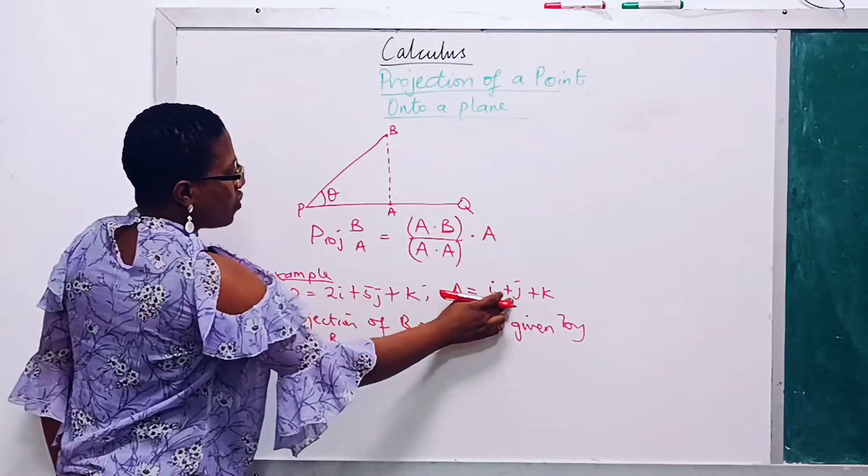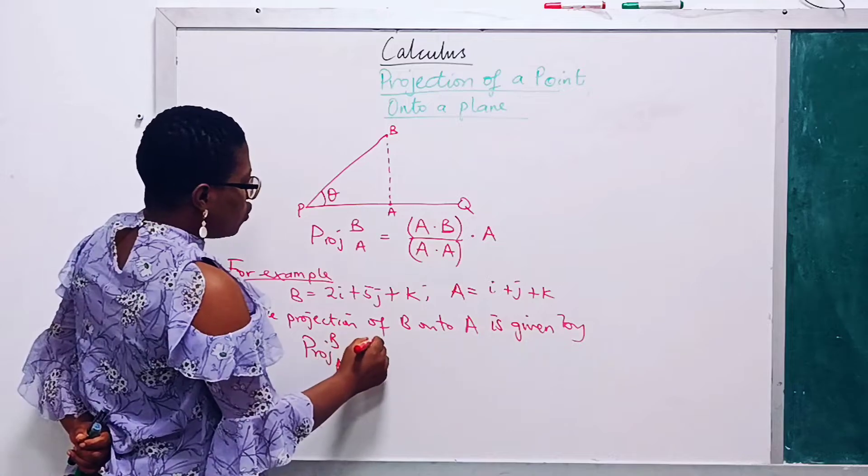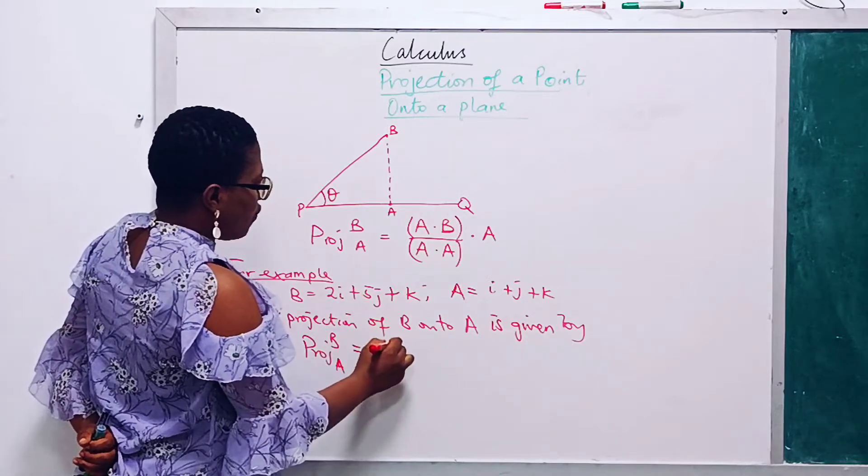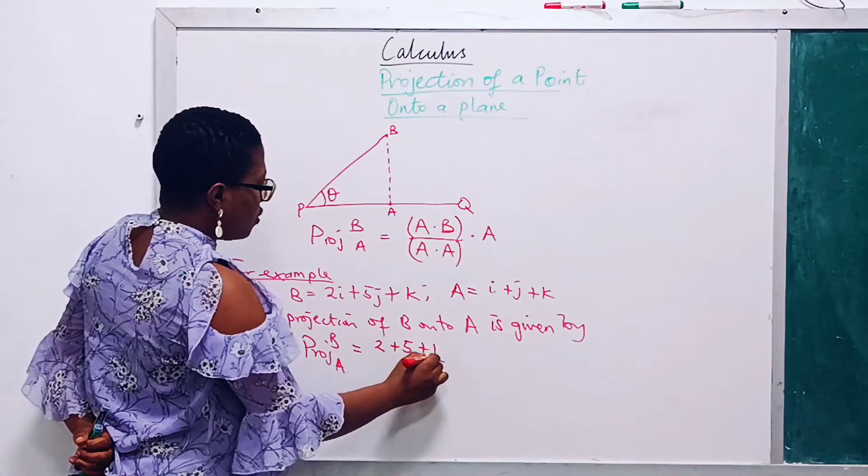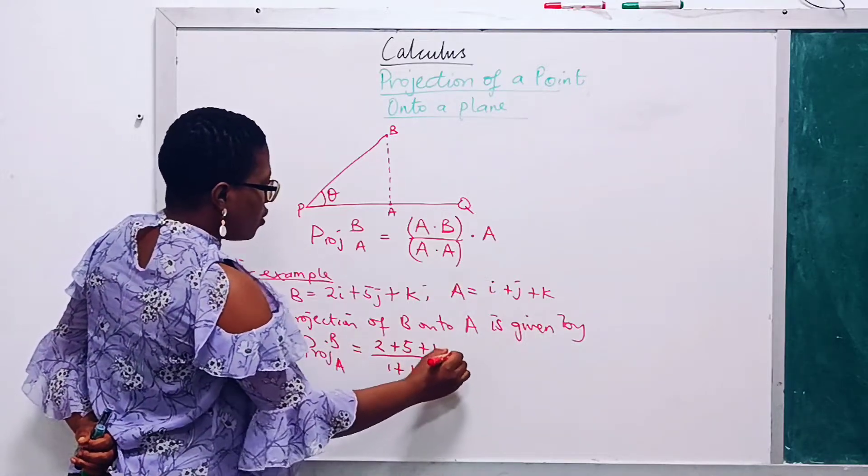Plus this times this, one times this. So we have 2 plus 5 plus 1 all over A dot A is 1 plus 1 plus 1.